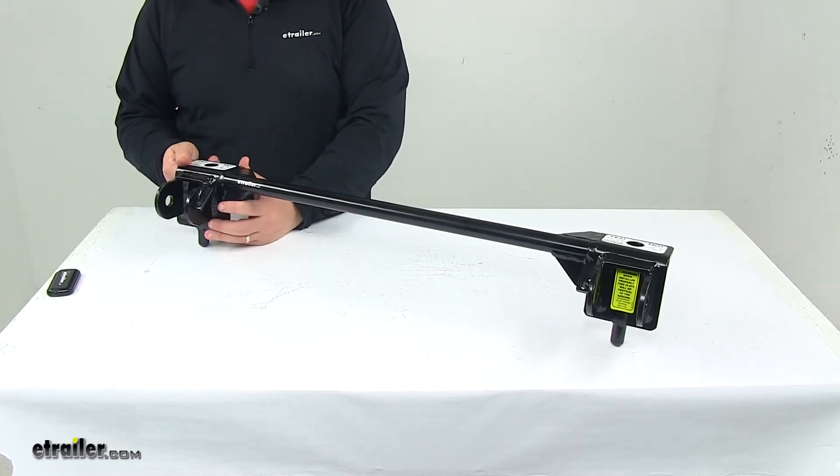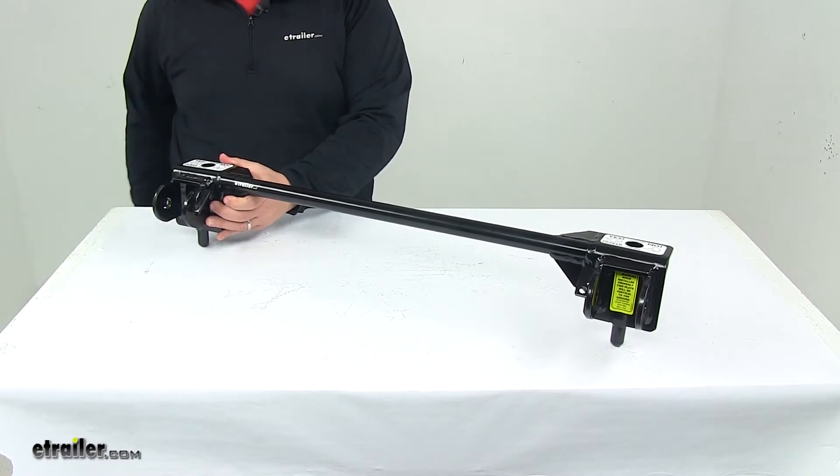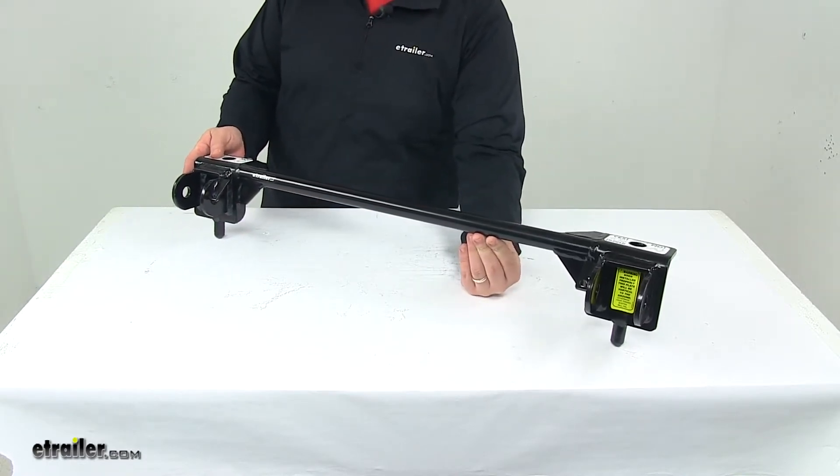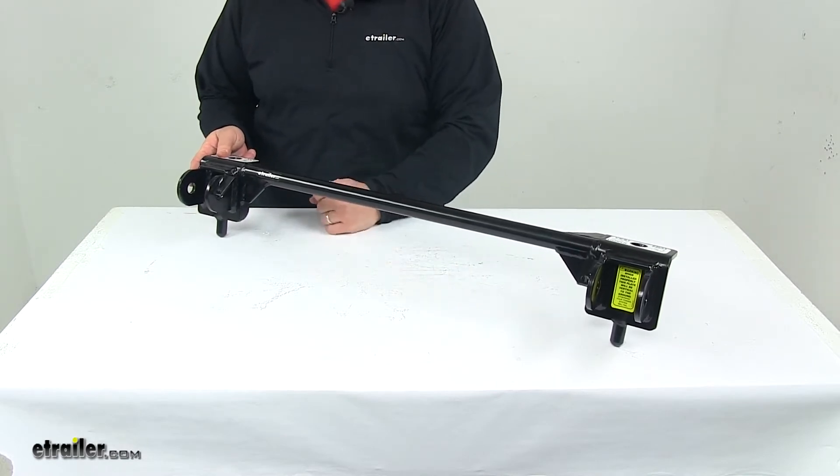Today we're taking a look at the replacement crossbar for the Roadmaster Motorhome Mounted Tow Bars. This replacement crossbar works with Roadmaster Motorhome Mounted Tow Bars that have the quick disconnects.